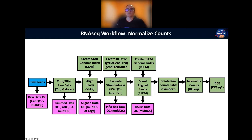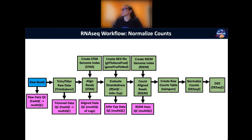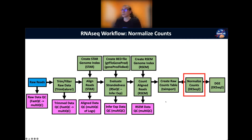As you guys recall, both in the Jupyter notebooks and in the lecture material, we have gone through all of these steps of the workflow. We're here now at the 'create raw counts table' step. In the notebooks we used Lauren's Python script to do this, but in our actual processing pipeline we use tximport, which is an R package, to pull information from the genes.results files from RSEM to create the table.